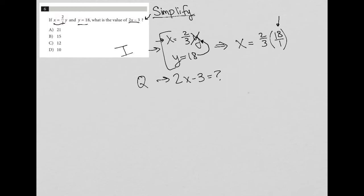How do I multiply this? I'm going to multiply straight across, although there is a shorter way to get it. But two times 18 is 36. Three times one is three. And 36 divided by three is 12. So now I know x equals 12.